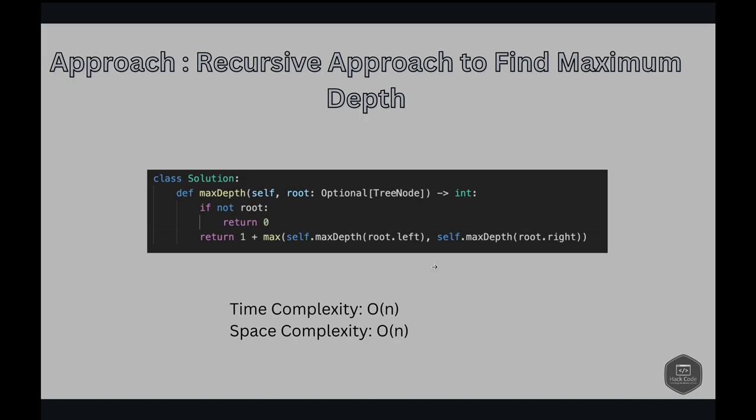Space complexity: In the worst case, the tree is completely unbalanced—that is, each node has only a left child or right child. The recursion would occur n times, the height of the tree. Therefore, the storage to keep the call stack would be O(n). But in the best case, the tree is completely balanced. The height of the tree would then be O(log n). Therefore, the space complexity in this case would be O(log n). We always consider the worst case in space complexity, so it's O(n) here.